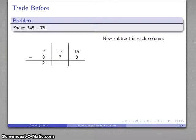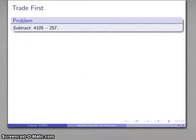2 hundreds minus 0 hundreds is 2. 13 tens minus 7 tens is 6. 15 ones minus 8 ones is 7. And my final answer, 2 hundreds, 6 tens, 7 ones.